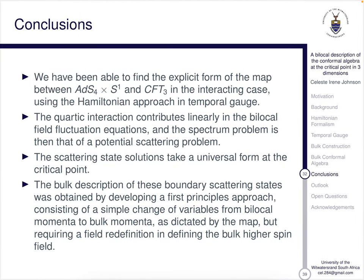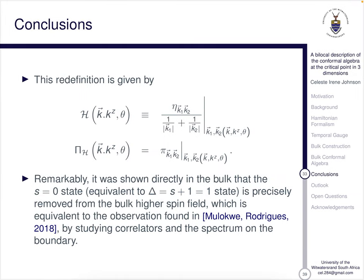So in conclusion, what have we done? We have been able to find the explicit form of the map between AdS4 cross S1 and CFT3 in the interacting case using the Hamiltonian approach in temporal gauge. Secondly, the quartic interaction contributes linearly in the bilocal field fluctuation equations, and so the spectrum problem is just that of a potential scattering problem. Thirdly, the scattering state solutions take a universal form at the critical point. As lambda tends to infinity we get a finite form, which is quite incredible. Fourthly, the bulk description of these boundary scattering states was obtained by developing a first principles approach, consisting of a simple change of variables from bilocal momenta to bulk momenta as dictated by the map, but requiring a field redefinition in defining the bulk higher spin field.